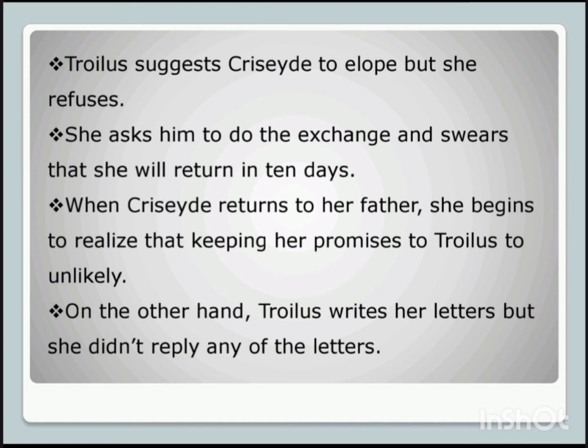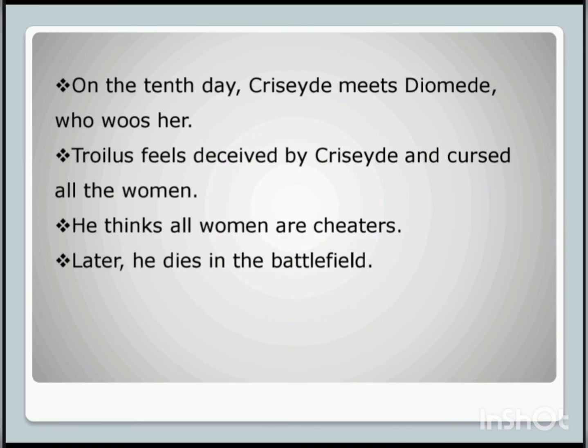When Criseyde returns to the Greek camp and her father, she begins to realize that keeping her promise to Troilus is unlikely. Troilus writes her letters but her responses are dismissive — she doesn't respond in the right manner. On the 10th day, the day she intended to return to Troy, Criseyde meets instead with Diomede, who woos her. Both Pandarus and Troilus wait for her return but she doesn't come. Troilus feels deceived by Criseyde and curses women, thinking all women are cheaters. Later, he dies in the battlefield.